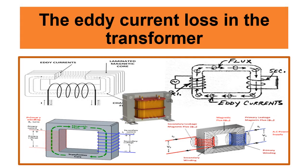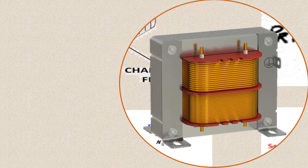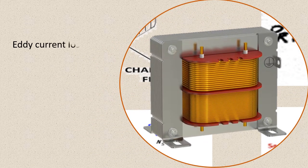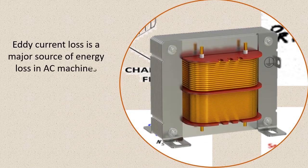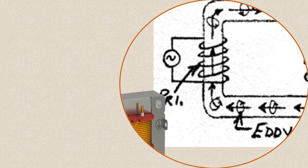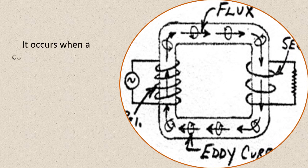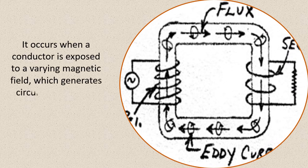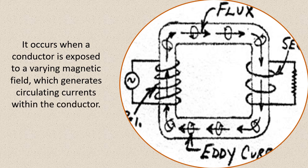The Eddy Current Loss in the Transformer. Eddy current loss is a major source of energy loss in AC machines like transformers, generators, and motors. It occurs when a conductor is exposed to a varying magnetic field, which generates circulating currents within the conductor.